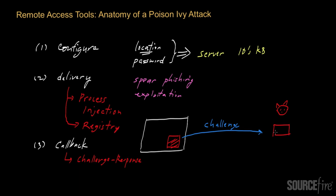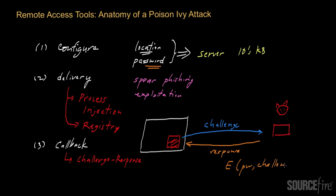The client will receive the challenge, and based on the challenge, the attacker's client will construct what is known as a response. In this particular case, the response will actually be the encryption of the challenge string using the encryption key that is derived from the password specified by the attacker when he set the attack up. So you can think of it as an encryption of the challenge string using the password effectively as a key, and that is how the response is formed by the attacker and sent back to the victim's system.